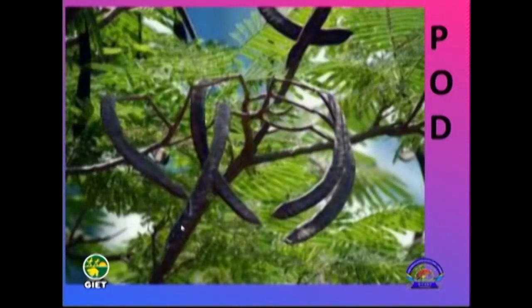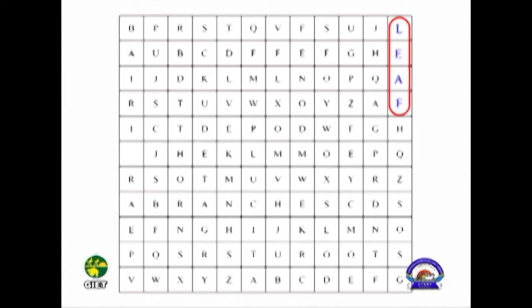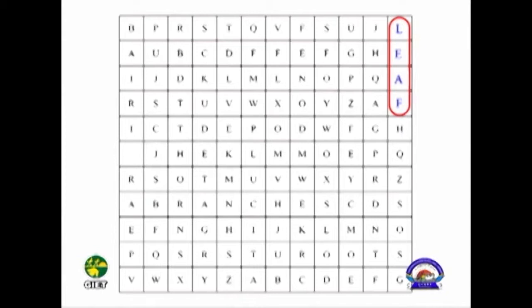Students, in your school, or around your house, if there is a gulmohar tree or a garmada tree, you must have seen long pods hanging from it — long thick pods like saragva pods. When they dry up, seeds form inside. That is called a pod. P-O-D. Now it's the turn of leaf: L-E-A-F. You can see the picture of a leaf on your screen. Yes.